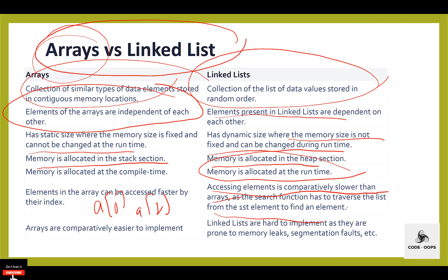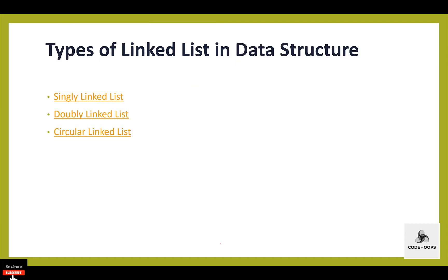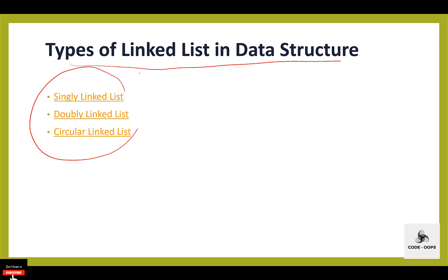Arrays are comparatively easy to implement, but linked lists are hard to implement as they are prone to memory leaks and segmentation faults. Next are the types of linked list in data structure. A linked list is a linear data structure in which elements are not stored at contiguous memory locations; elements are linked using pointers. In simple words, a linked list consists of nodes where each node contains a data field and a link to the next node. There are three types of linked list: singly linked list, doubly linked list, and circular linked list.